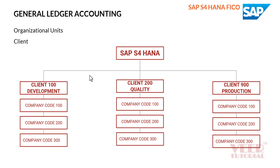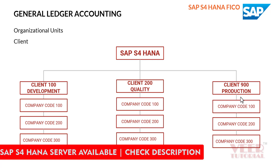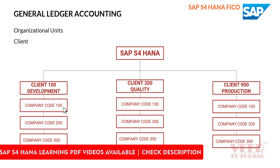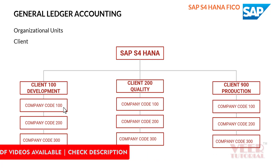Again, in SAP S4 HANA there are three or four systems — we call them clients. They have their own codes like 100, 200, 300, and names like development, quality, and production. We do all the configuration in the development client and all clients are separate from each other but connected together.